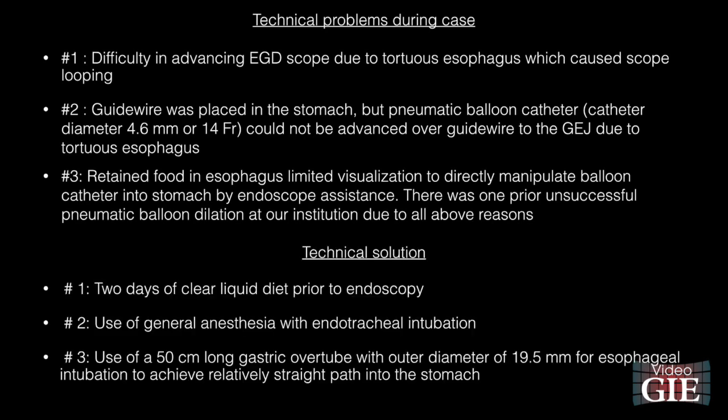To overcome these problems, we placed the patient on two days of a clear liquid diet prior to endoscopy, and used general anesthesia with endotracheal intubation to reduce the risk of aspiration. Most importantly, we used a 50 centimeter long gastric overtube for esophageal intubation to achieve a relatively straight path into the stomach, as we will demonstrate.